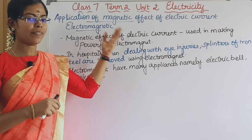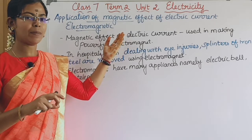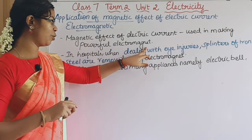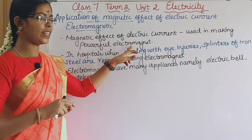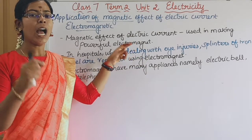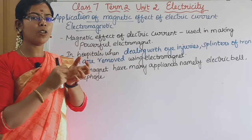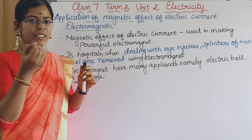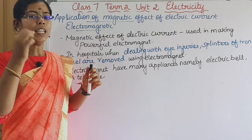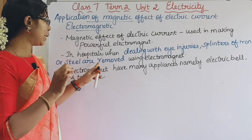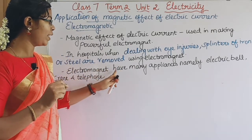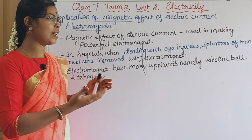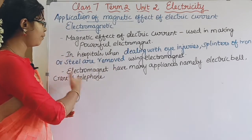The next is the magnetic effect of electric current, which is an electromagnetic effect. In hospitals, there are splinters of iron or steel, and it is easier to use an electromagnet to remove them. Electromagnets have many applications. They can be used in electric bells, cranes, and telephones.